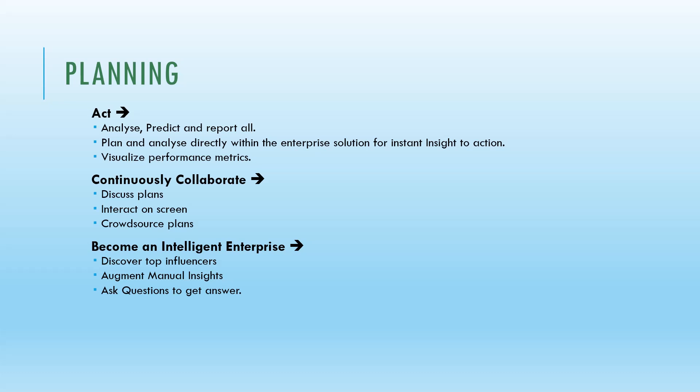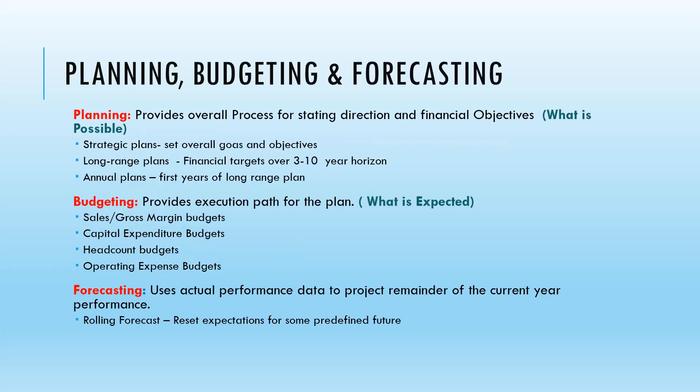Finally, based on planning, forecasting, and actual budgets, we can become an intelligent enterprise — where we can discover top influencers, augment manual insights, and ask questions to get answers. So the three things are: Act, continuously Collaborate, and become an Intelligent Enterprise.